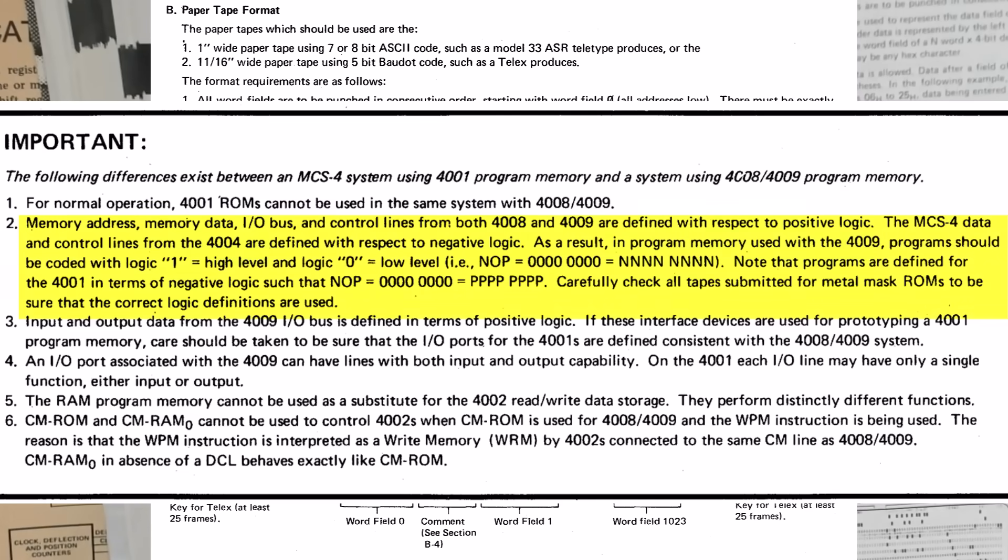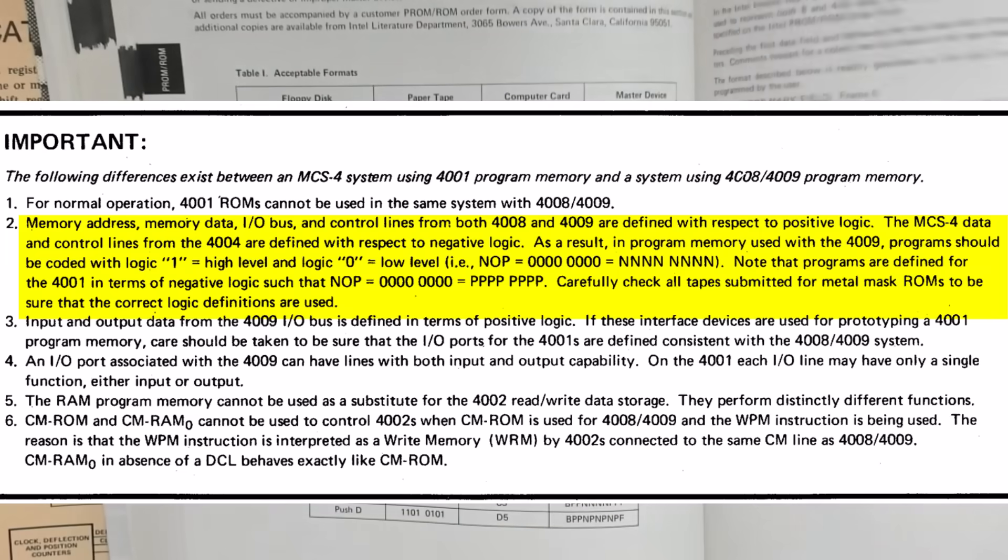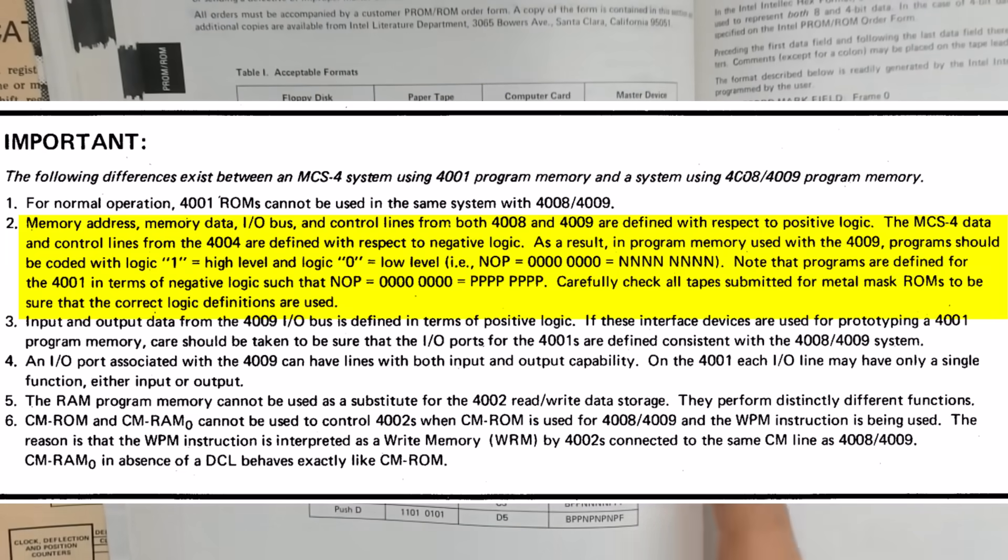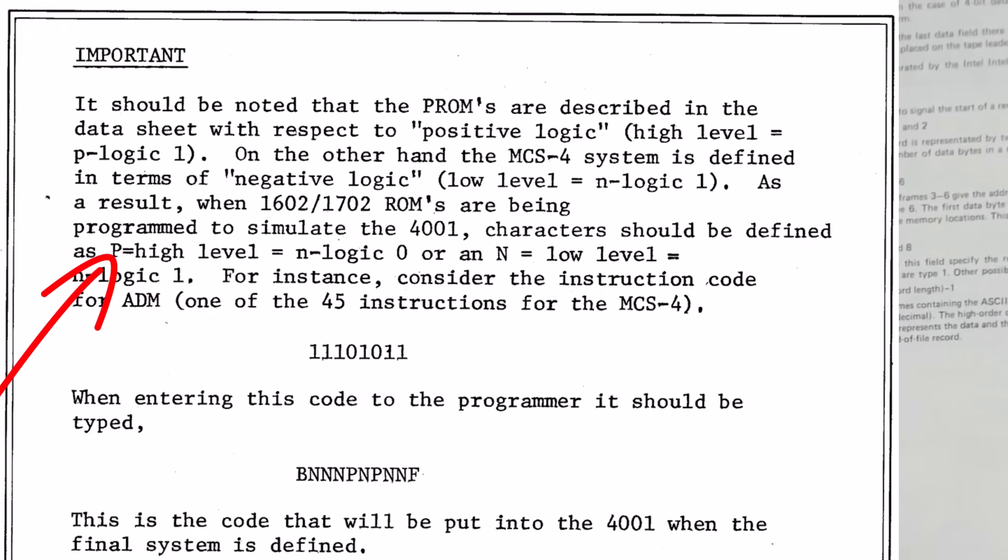The first was for clarity because some ROMs at the time had negative logic. And it was a time of change when the 4004 came along. Rather than using ones and zeros, it was hoped that using P, meaning positive, and N for negative logic or low level would be somewhat, you know, reduce the potential for confusion.